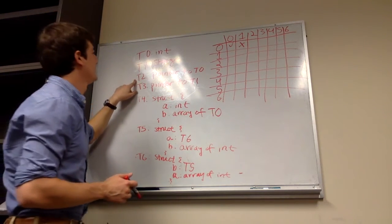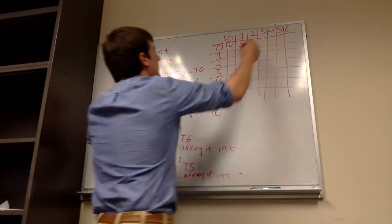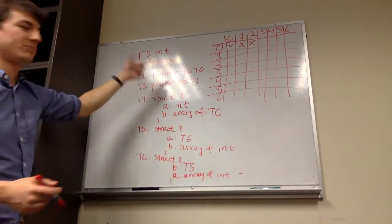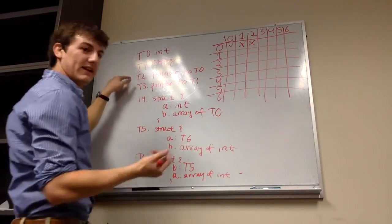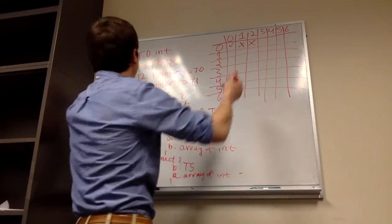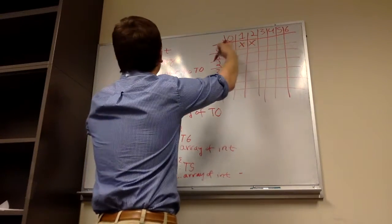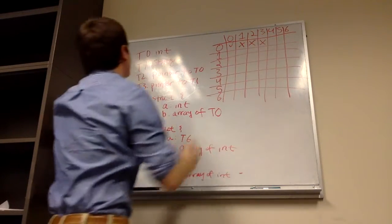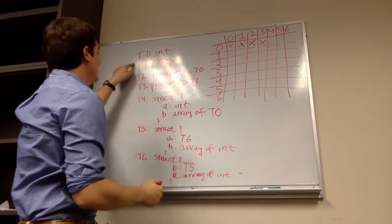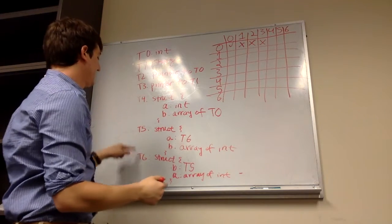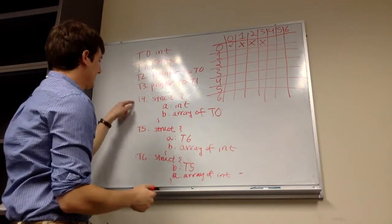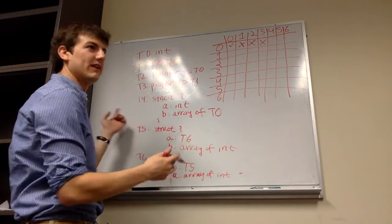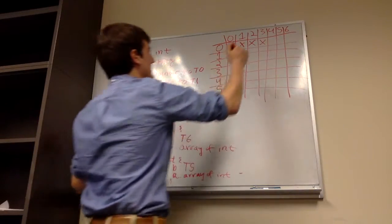T0 and T2 — it's a pointer, so not equivalent. T0 and T3, nope. T0, T4, T5, T6 — we can use what we talked about today: these are all structs, so there's no way they can ever be the same thing as T0.